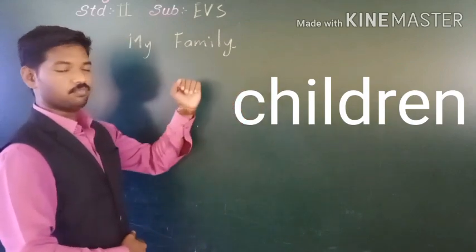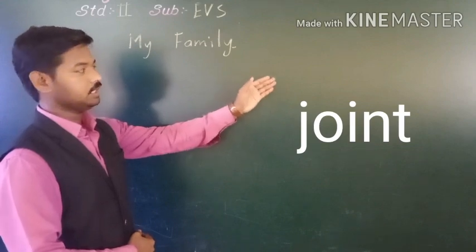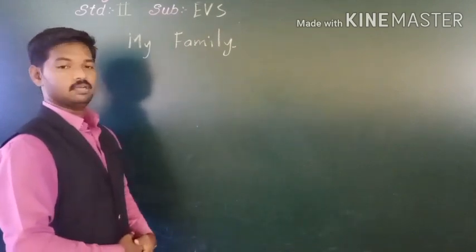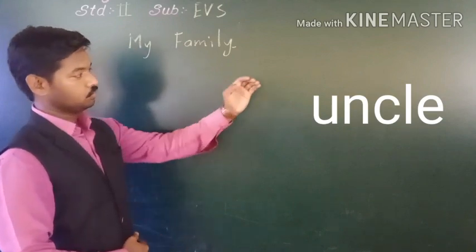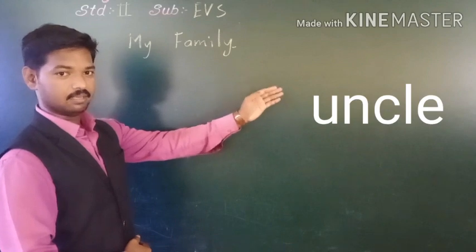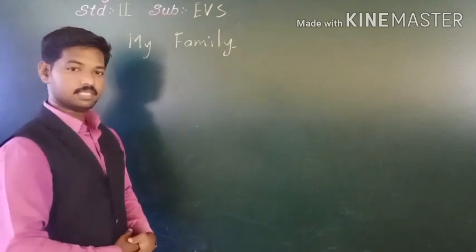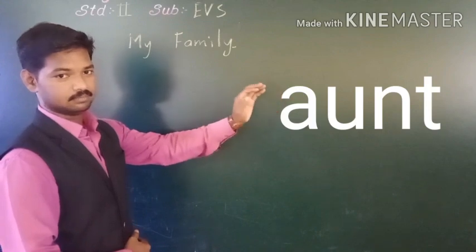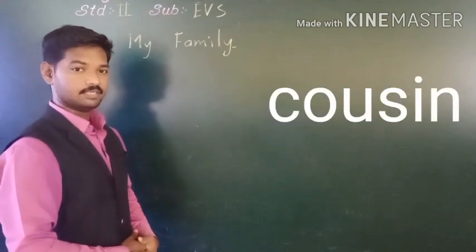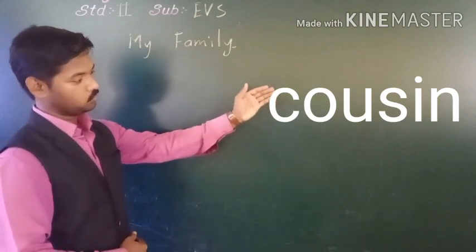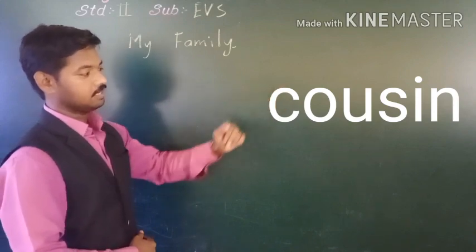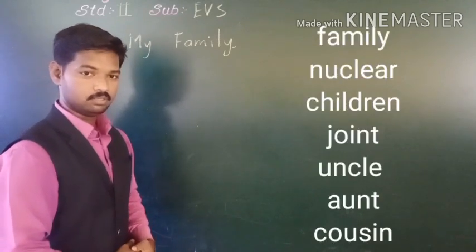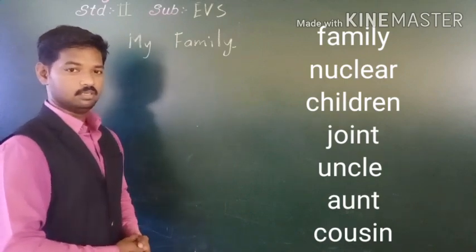Number four: joint — J O I N T. Number five: uncle — U N C L E. Number six: cousin — C O U S I N. So these are all the new words. You have to copy them down in your notebook and also recite all these new words today.